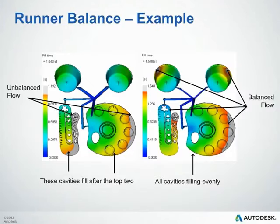This is a good example of how the runner balance analysis can help balance a family tool. In this case, we have several components that vary quite a bit in their part volume. In the image on the left, you can see clearly unbalanced flow — the bottom two cavities have a much larger volume, so they're filling quite a bit later than the top two cavities. Then on the right, after running the runner balance analysis, you can see all four cavities are filling in a similar manner, within 5%.